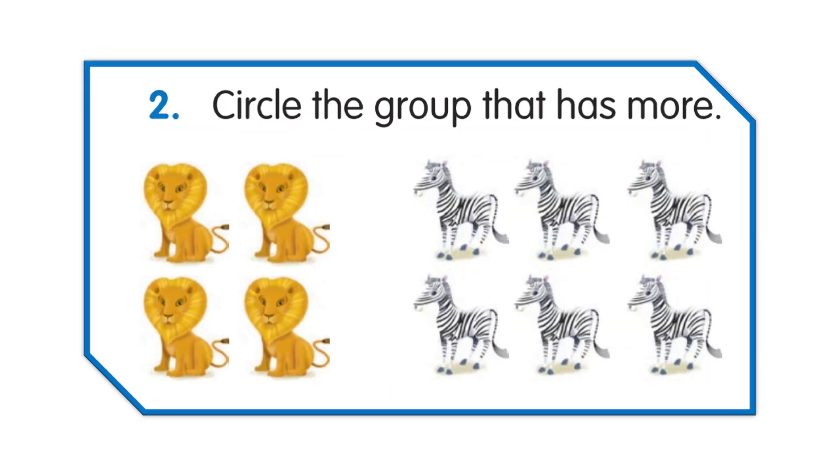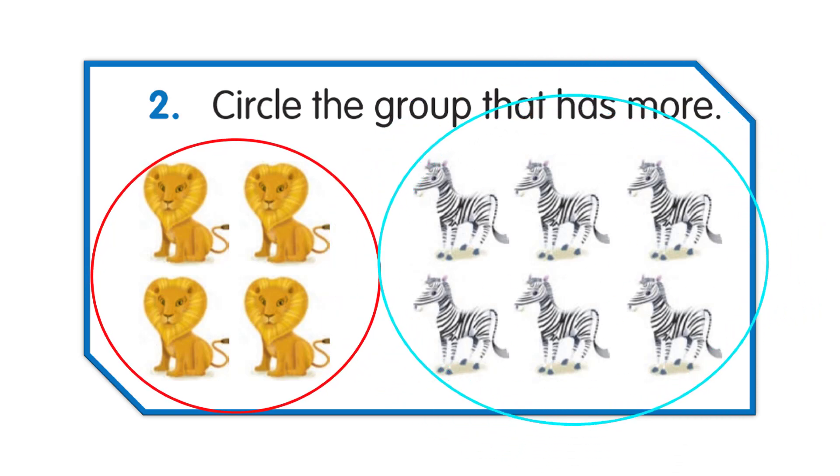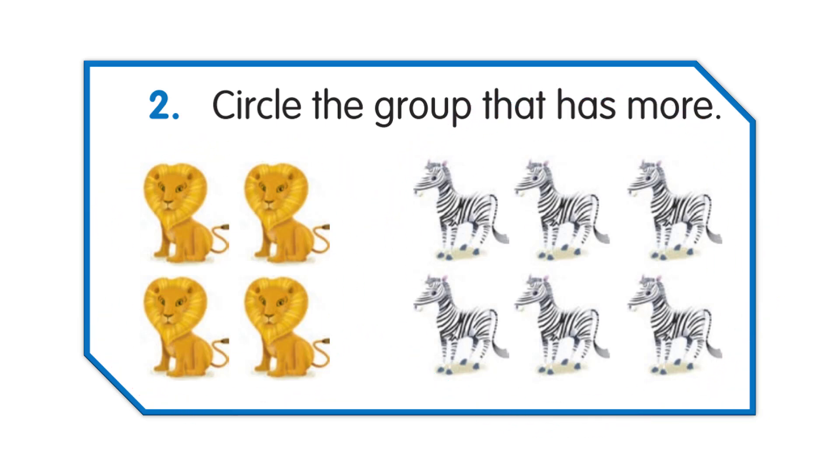In this question, the first group has 4 lions and the second group has 6 zebras. Can you circle the group that has more? Yes, you can.